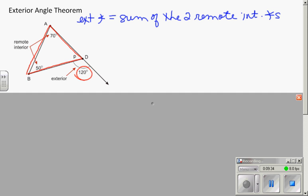Here's my triangle. This angle would not be remote. It would not be far away from the exterior angle. So we are after this angle and this angle as the remote interior. And they end up being equal. And as you can see, 70 plus 50 is 120.